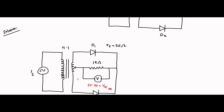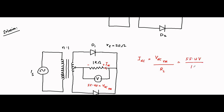The current flowing through the 1 kilo ohm load resistor — I_DC — flows in the conduction direction. I_DC equals the voltmeter reading V_DC divided by the load resistance: 55.4 volts divided by 1 kilo ohm, which equals 55.4 milliampere. This is the DC current flowing through the load.